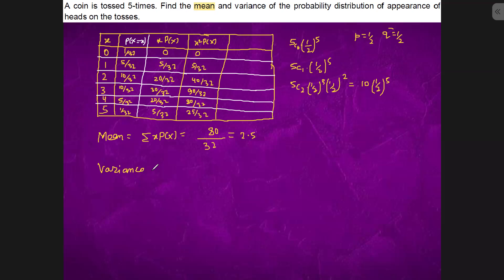Variance is summation X square P(X) minus mean whole square. So, summation X square P(X), adding: 30, 40, 70, 90, 160, 160 plus 80, 240 upon 32.